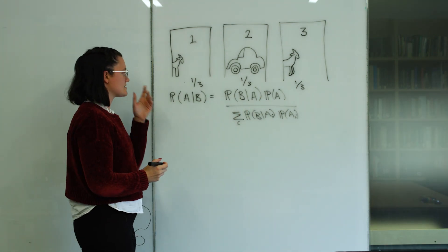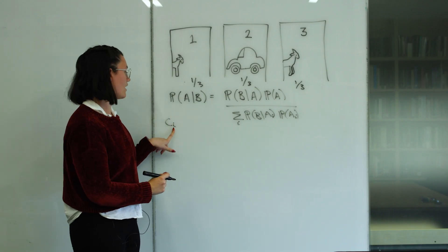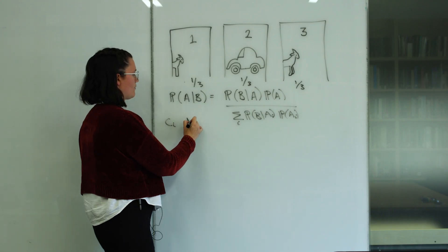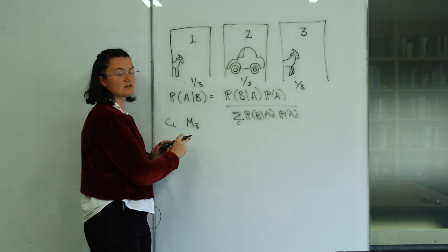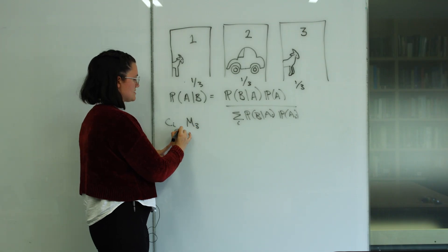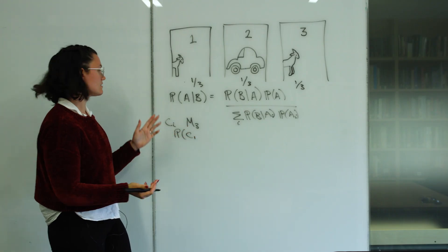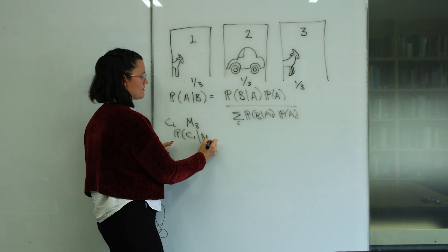So in this case, we're going to say that C_i is the probability that the car is behind door i. And that, well, we're only interested in M_3, so Monty's going to open door number three. So what we want to do is say the probability that the car is behind door one, so the door that we've already chosen, given that Monty opens door number three.